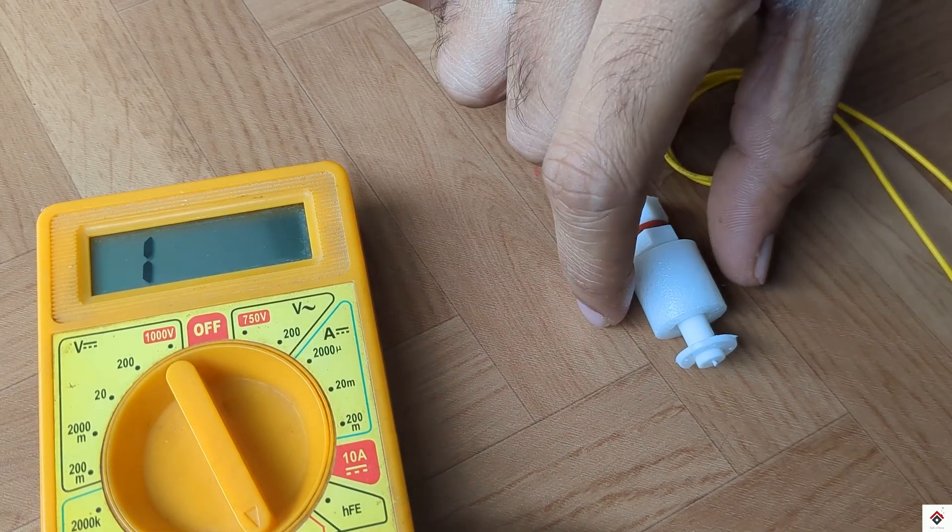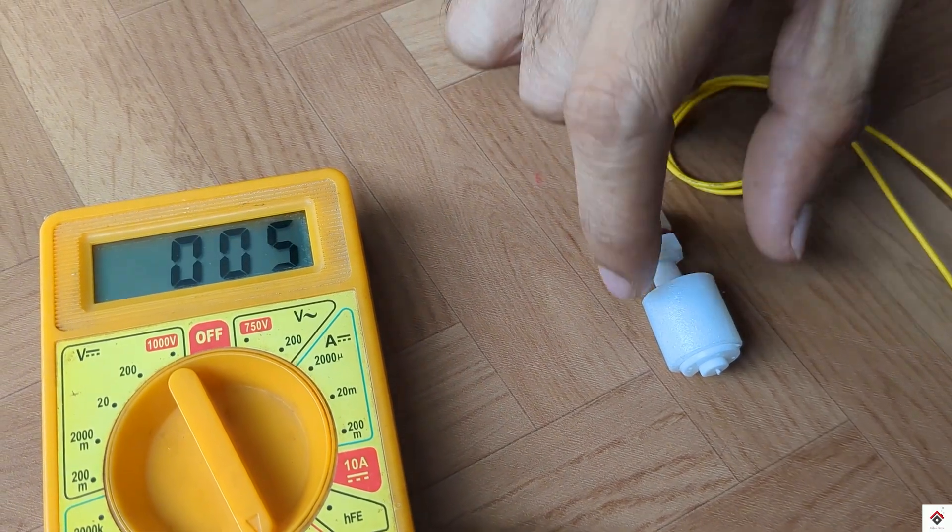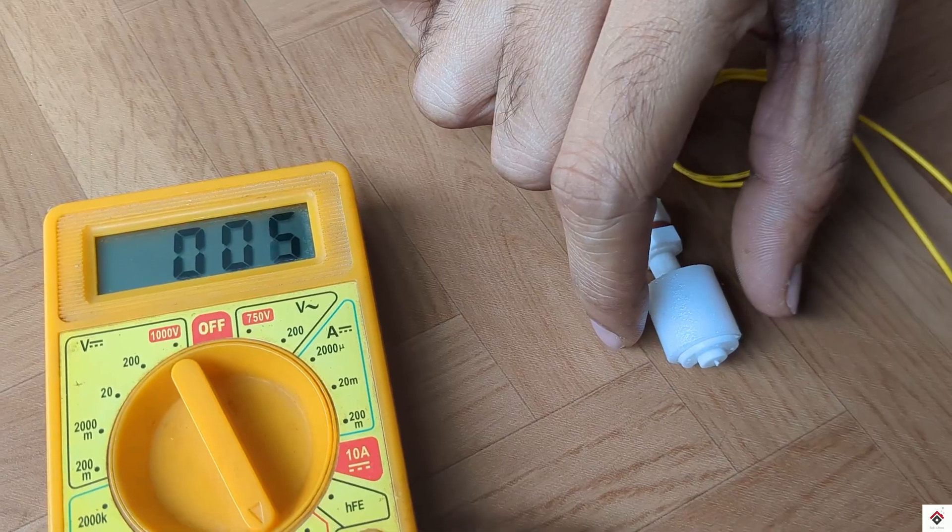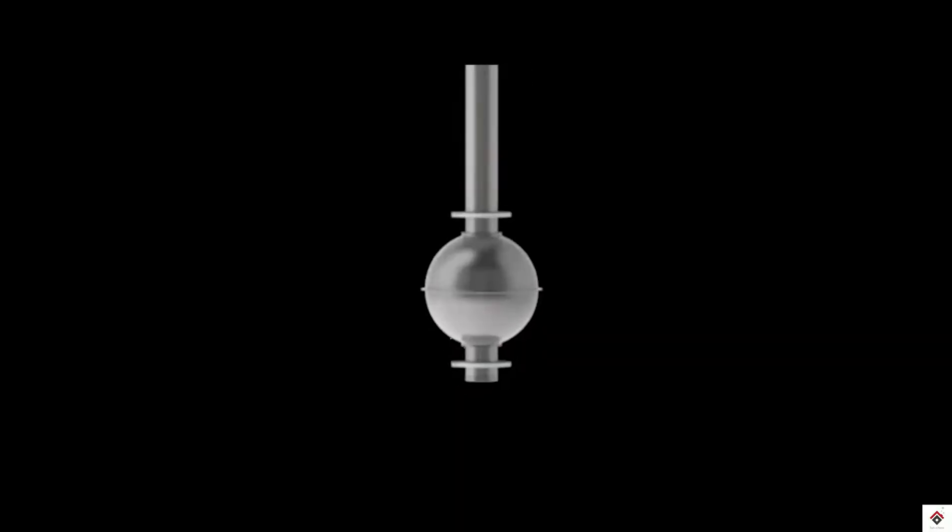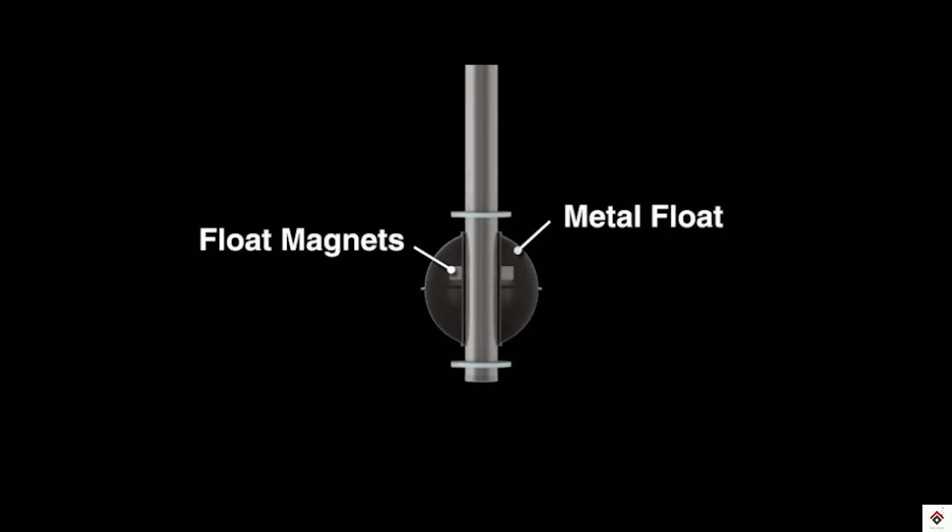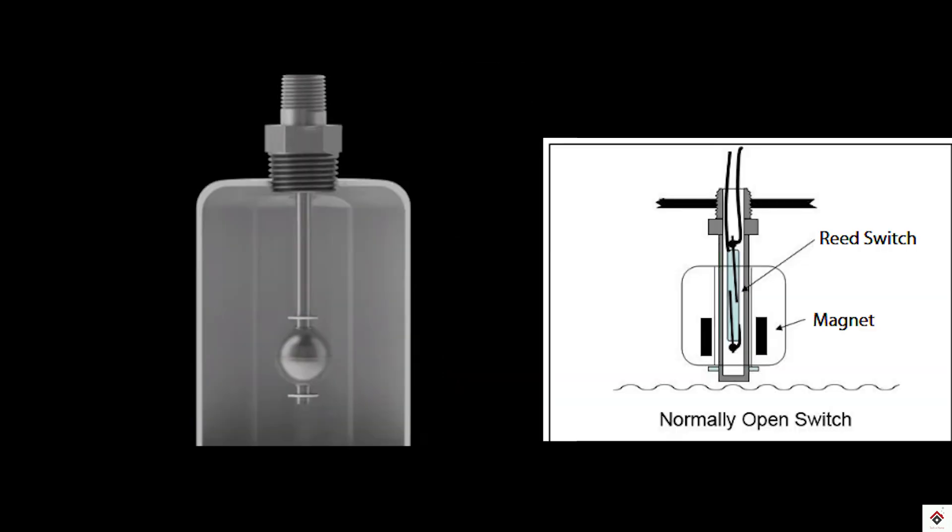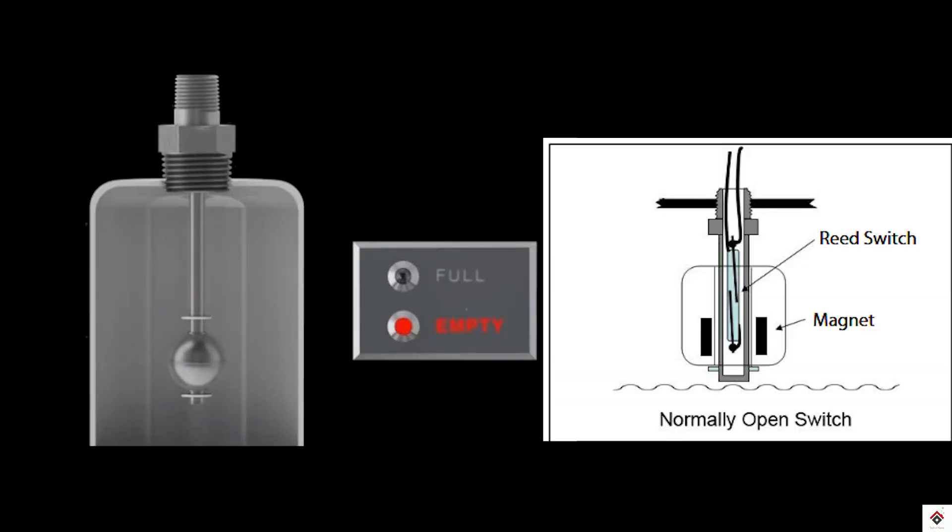This sensor is nothing but a digital switch which is activated using a magnet. It consists of a reed switch and a float with a magnet inside. When there is low fluid level, the float goes to the bottom side, so the reed switch will be in the off state.